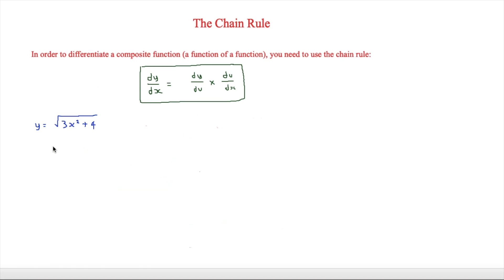The next question says y equals the square root of (3x squared plus 4). To do this, we just need to know that a square root means to the power of a half. So we can write this as (3x squared plus 4) to the half. Therefore y equals u to the half, and u equals 3x squared plus 4.